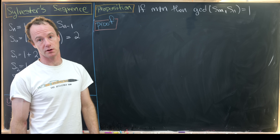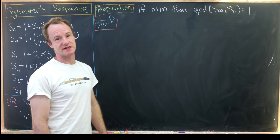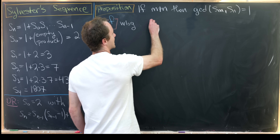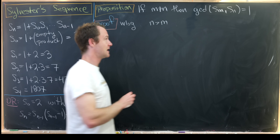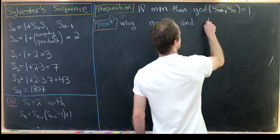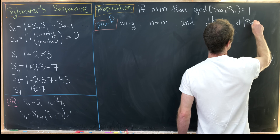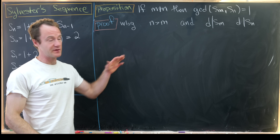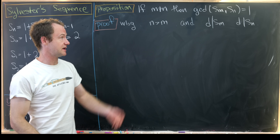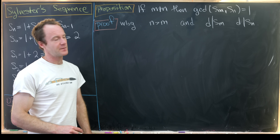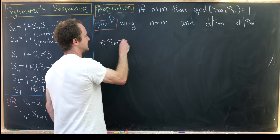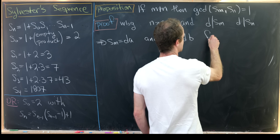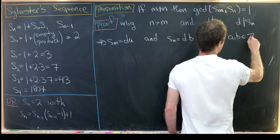If m and n are not the same, one has to be bigger, so without loss of generality let's suppose that n is bigger than m. Let's also suppose we have a common divisor d of S_m and S_n — that's something that divides both of them. That means S_m equals d times a and S_n equals d times b for some integers a and b.